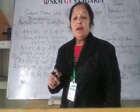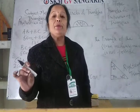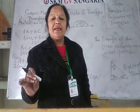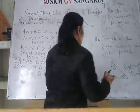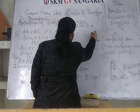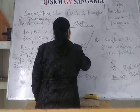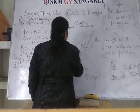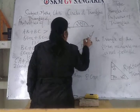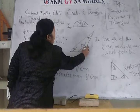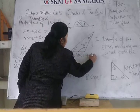If in a triangle one of the angles is an obtuse angle — an obtuse angle means an angle greater than 90 degrees but less than 180 degrees — and the other two are acute angles, then that triangle is called an obtuse angled triangle.